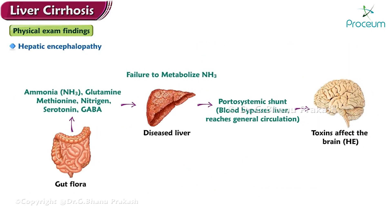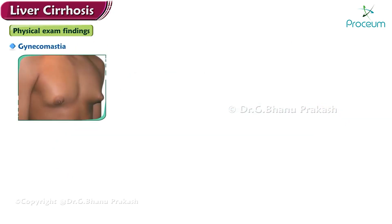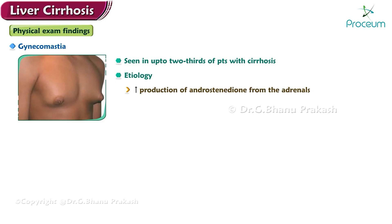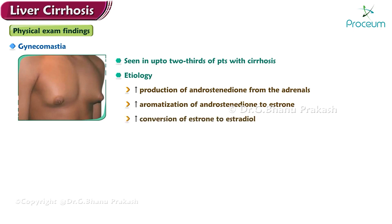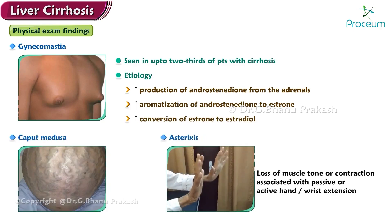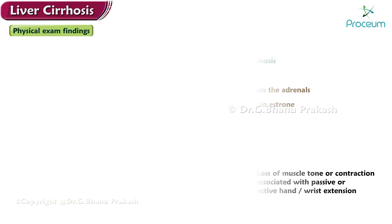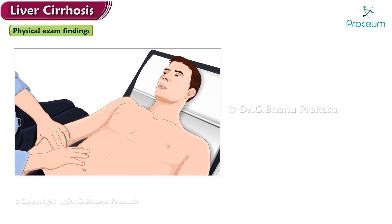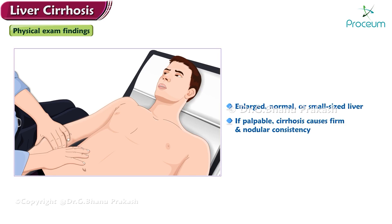Hepatic encephalopathy. Gynecomastia is seen in up to two-thirds of patients with cirrhosis. It is possibly caused by increased production of androstenedione from the adrenals, enhanced aromatization of androstenedione to estrone, and increased conversion of estrone to estradiol. Caput medusae. Asterixis. A physical exam of the liver may reveal an enlarged, normal, or small-sized liver; if palpable, cirrhosis causes it to have a firm and nodular consistency.